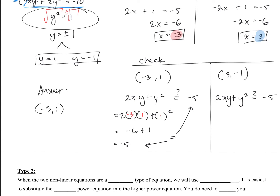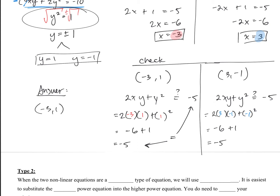Now checking the other pair: 3 and negative 1. We have 2xy plus y squared and we want to make sure this equals negative 5. Plugging in x = 3, y = negative 1: we get negative 6 plus 1, which equals negative 5. Both pairs work. So our solutions are negative 3, 1 and 3, negative 1.